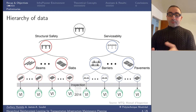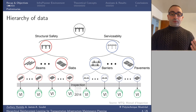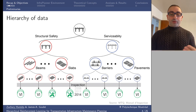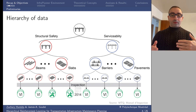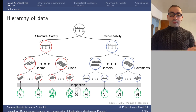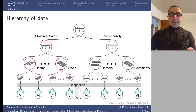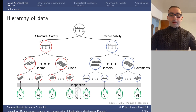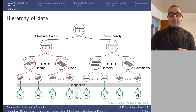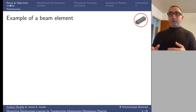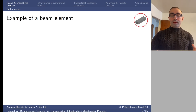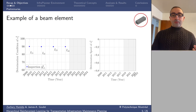In addition to visual inspections, we also have information about interventions — we know what type of intervention took place and when it took place. For example, we have interventions that happened on the slabs, and after that visual inspections would carry on as usual. The first part of the project focused on element-level modeling based on visual inspection data.